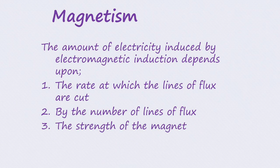The amount of electricity induced by electromagnetic induction depends upon three things: one, the rate at which the lines of magnetic flux are cut; two, by the number of lines of flux; and three, by the strength of the magnet.